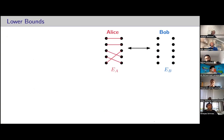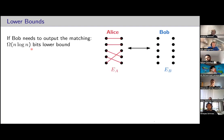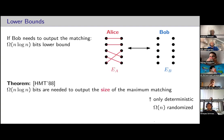Let's look at lower bounds. If Alice has a perfect matching and Bob has an empty graph, then if Bob needs to output the matching itself — not just its size — he will need to know all these edges from Alice. Alice essentially has a permutation, and it needs n log n bits of communication. Even if Alice and Bob only need to output the size of the maximum matching, there is also an n log n lower bound — though only deterministic, and it's still open whether you can do it faster in randomized.